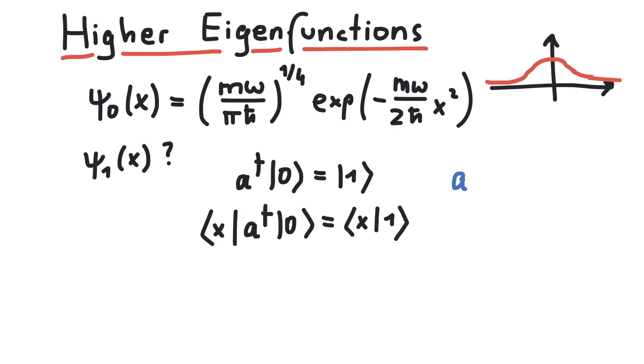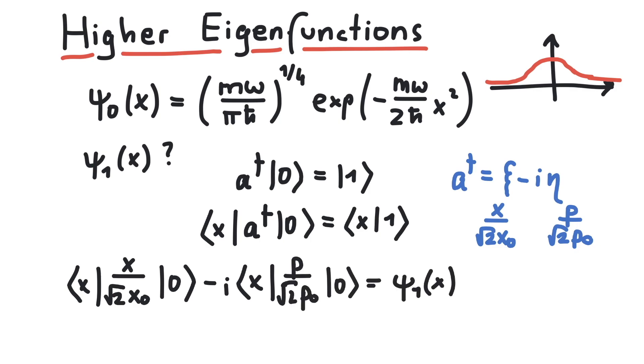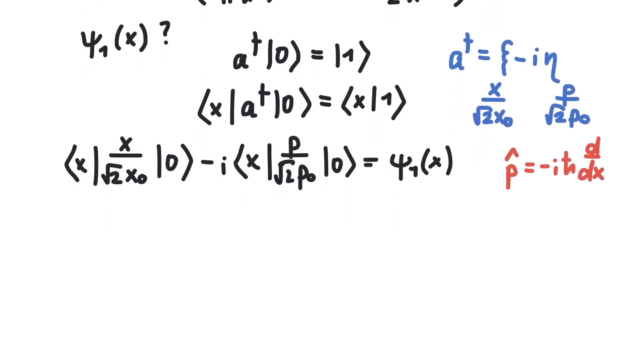We can write a† in terms of ψ and η, and then those as x and p. We can plug that in and get this. Now remember that the momentum operator is basically a derivative in position space, so that we get this differential equation.